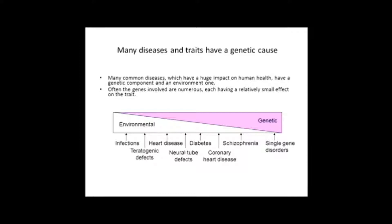We know that genetics are really important in most medical conditions, from the single gene disorders that many people will think of as pure genetics — things like cystic fibrosis, which are entirely genetically caused — down to things like infections, which have a very minor genetic contribution. But the things in the middle, like diabetes and heart disease, are the real big burdens on the healthcare budget. And these have a mixture of genetic and environmental components.